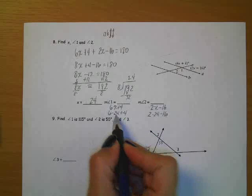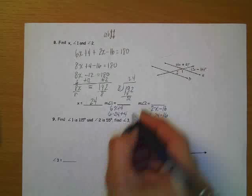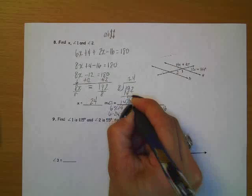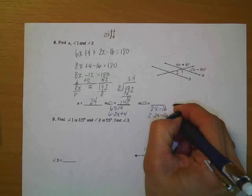6 times 24 is 144. And then plus 4 is 148. Okay? 2 times 24 is 48. And then we're going to take 16 away from that. And we get 32.